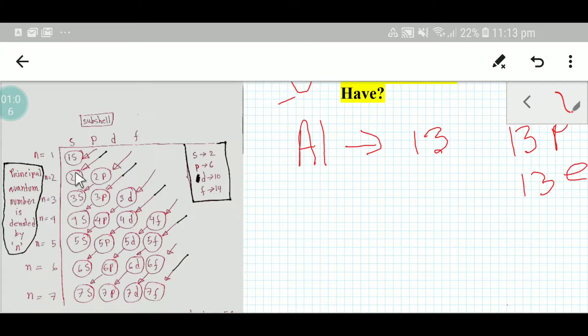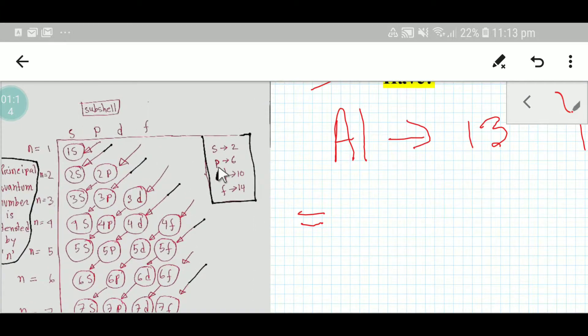You know that s subshell can take maximum 2 electrons, p subshell can take maximum 6 electrons, d subshell can take maximum 10 electrons, and f subshell can take maximum 14 electrons. Remember there is a difference between subshells and orbitals.